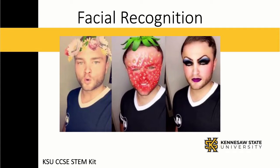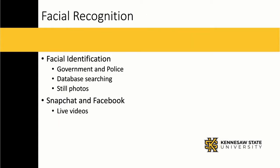Welcome to the presentation on facial recognition by Kennesaw State University. We're going to talk about two major types of facial recognition. The first is facial identification, usually done in government and police work. They use database searching and still photos to do their identification. The second type is through Instagram, Snapchat, and Facebook filters, and these use live videos.